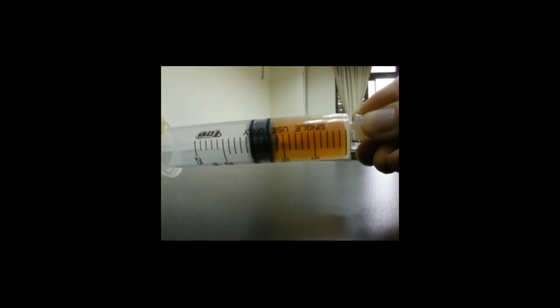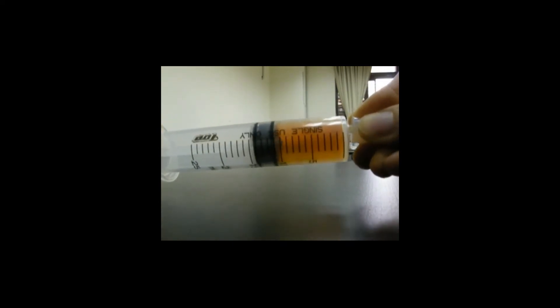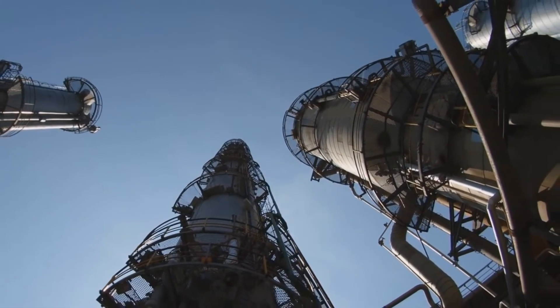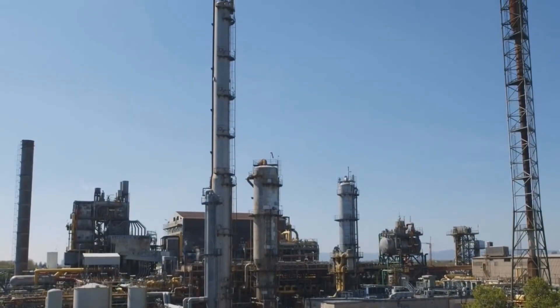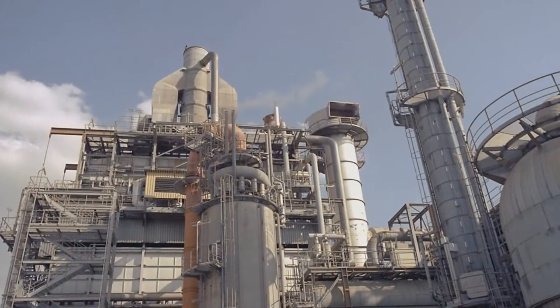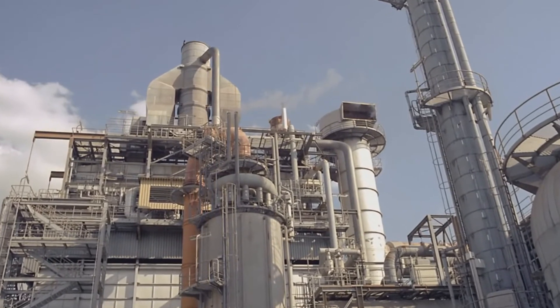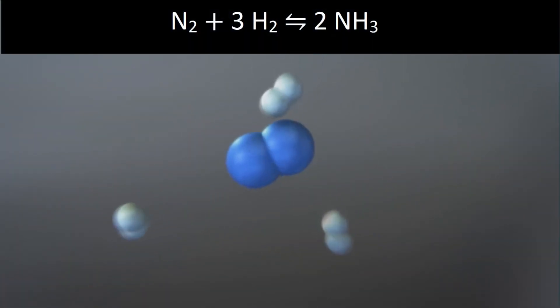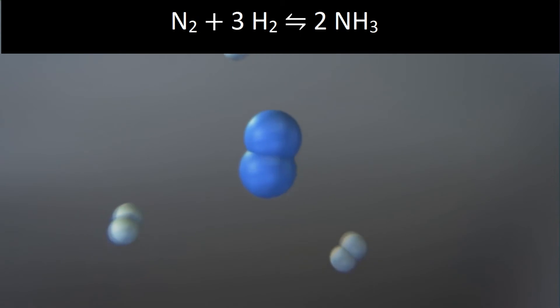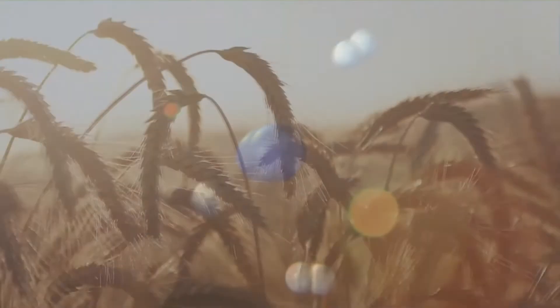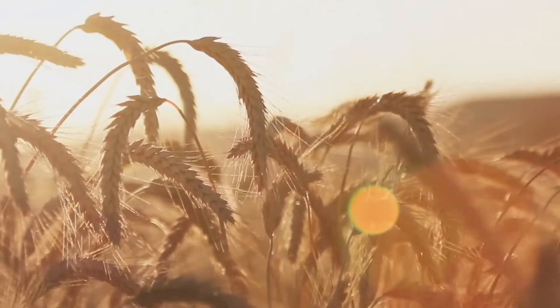But if the volume is increased, thus reducing the pressure, the system will respond by shifting to increase the pressure. These discoveries led to the Haber-Bosch process, which is an artificial nitrogen fixation process and is the main industrial procedure for the production of ammonia today. The reaction is as follows. Believe it or not, if it isn't for this reaction and the Haber-Bosch process, the world would today starve.